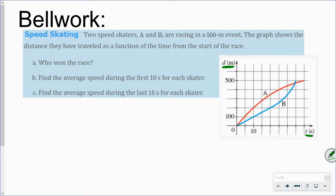Okay, so who won the race? Well, that would be the person that went 500 in the shortest amount of time, which would be racer or skater B. Find the average speed during the first 10 seconds for each skater. The average speed is the average rate of change. So we're looking from here to here to here and here. We're finding the slope between those two points.